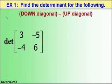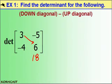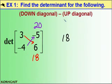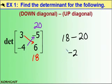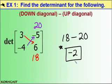Let's take a look at Example 1 to illustrate this process. We're going to find the determinant of the 2x2 matrix: 3, negative 5, negative 4, and 6. The product of our down diagonal is 3 times 6, which is 18. Then the product of our up diagonal: negative 4 times negative 5 gives us positive 20. To find the determinant, we take our down diagonal product, 18, and subtract the up diagonal product: 18 minus 20 gives us negative 2. So the determinant of this 2x2 matrix is negative 2 — a scalar quantity relating all the elements of our matrix.